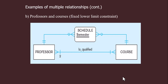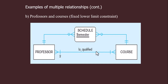Another example of multiple relationships shows the relationship between professor and course. One professor can teach many courses, but at least he or she should teach at least one course. Or for a particular course there can be many professors, but at least there should be one professor. This is a qualified relationship — for one particular course there should be one qualified professor, and one professor can be qualified in many courses or at least one.